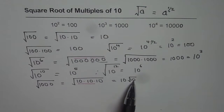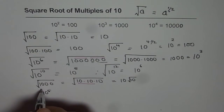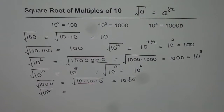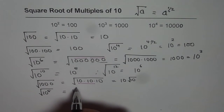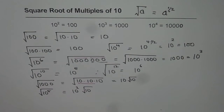Extending this, if I say 10 to the power of 5, what is the square root of that? Half of 5 is 2 and a half — 2 full means 10 squared, and 1 still remains inside the square root. So that is how you write down your answer.